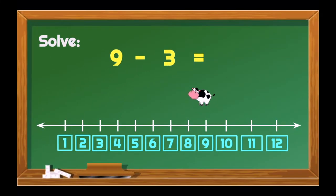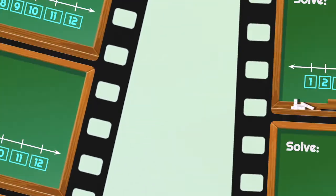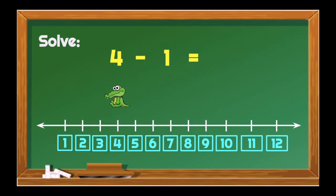For our next item, we need to solve 9 minus 3. From 9, let's count 3 steps backward: 8, 7, 6. So, 9 minus 3 is equal to 6. Good job! This time, it's 4 minus 1. From 4, let's count one step backward: 3. So, 4 minus 1 is equal to 3. Marvellous!